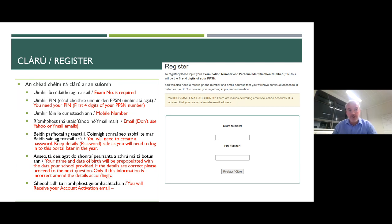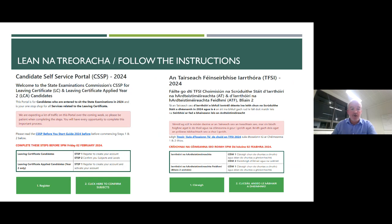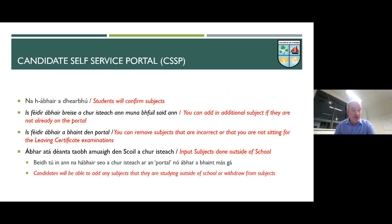Their personal details should be pre-populated there — this will include date of birth and information like that. If there's a mistake with it, they can fix the error at this stage. Once they do that, they press register and will get an email to the email account they supplied. Then they can go to phase two, which is to log in, and they click to confirm subjects. In the next section, they will be confirming their subjects. If they're doing any subjects outside of school, they will be adding subjects. If the portal has a subject included that maybe they started in fifth year but have since changed, they need to delete that subject at this point. The main thing is checking that every subject they're going to sit for the Leaving Cert is correct.